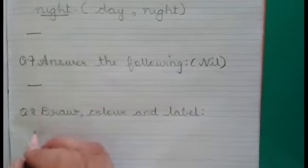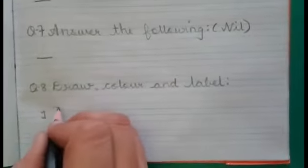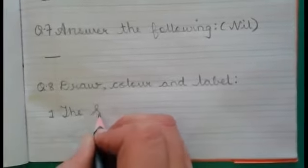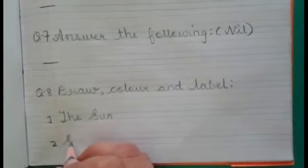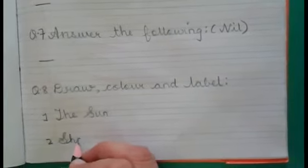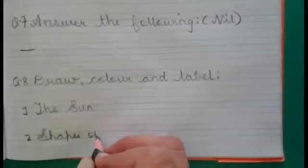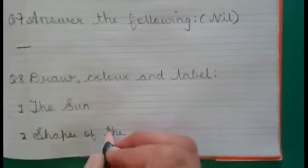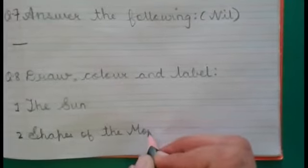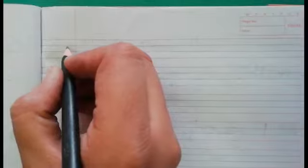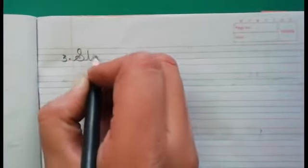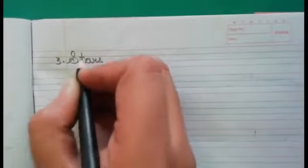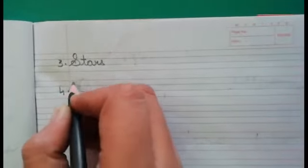Number 1: The sun. Number 2: Shapes of the moon. Number 3: Stars. Number 4: Rocket.